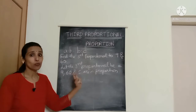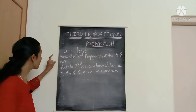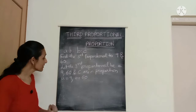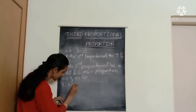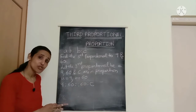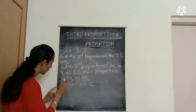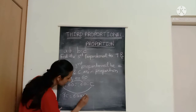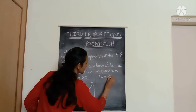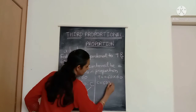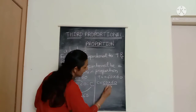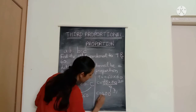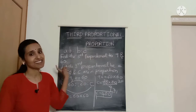Since we have three quantities in proportion, we use the proportionality statement: 9 is to 60 as 60 is to C. Now applying the rule that the product of extremes equals the product of means: 9 multiplied by C equals 60 multiplied by 60, so 9C equals 3600. Bringing 9 to the denominator and simplifying by dividing in threes, we get C equals 20 times 20, which is 400. So the third proportional to 9 and 60 is 400.